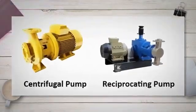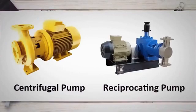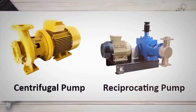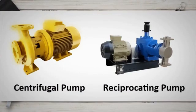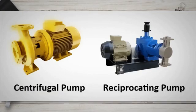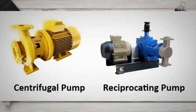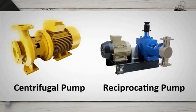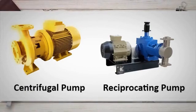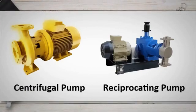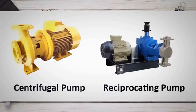Positive displacement pumps, on the other hand, displace a fixed volume of fluid with each rotation, ensuring a constant flow. This type of pump is preferred for applications requiring precise control of flow rates, such as injecting chemicals into a process stream or transferring viscous fluids like heavy crude oil.